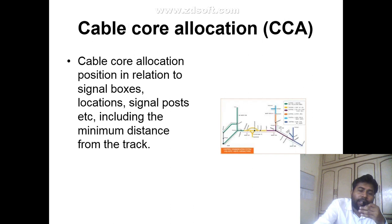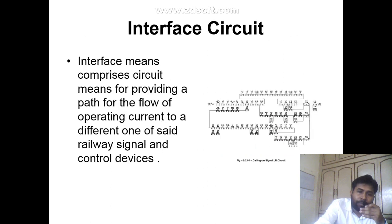Next is Cable Core Allocation — CCA. Cable core allocation defines the position in relation to signal boxes, locations, and signal ports, including the minimum distance from the track. Next is interface circuit.